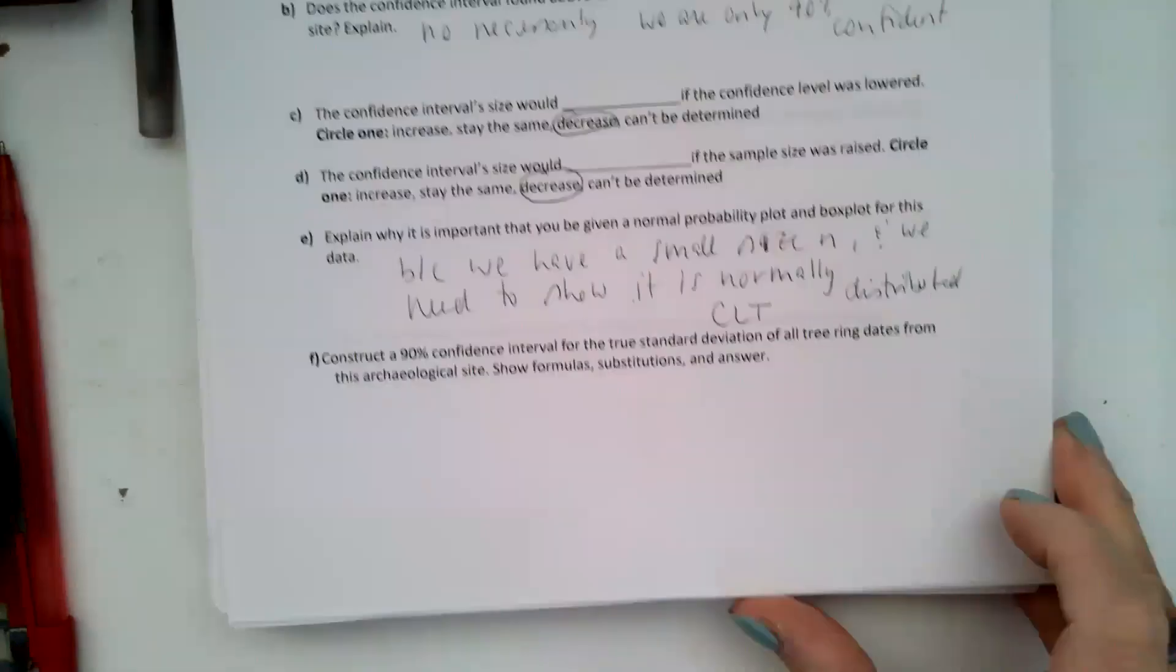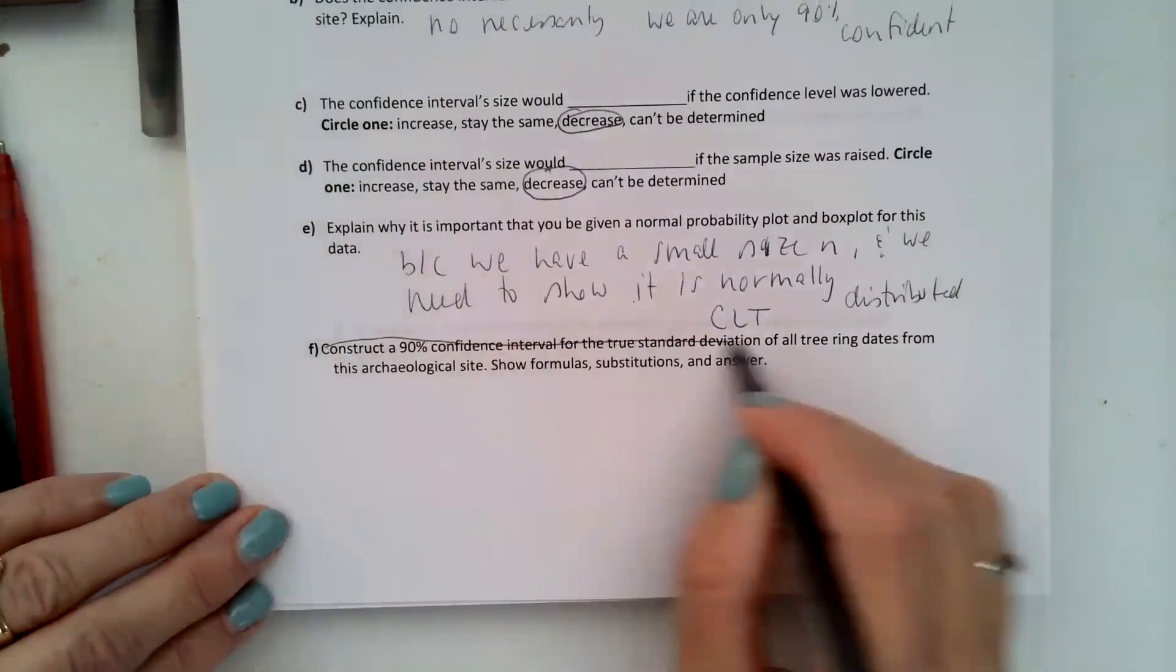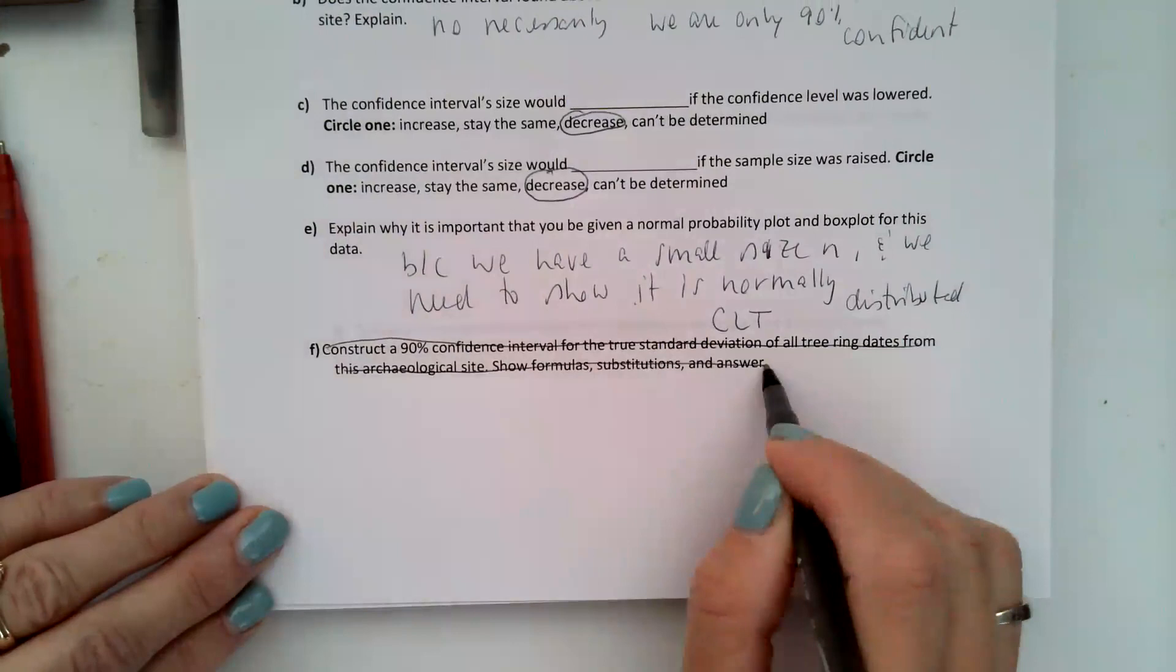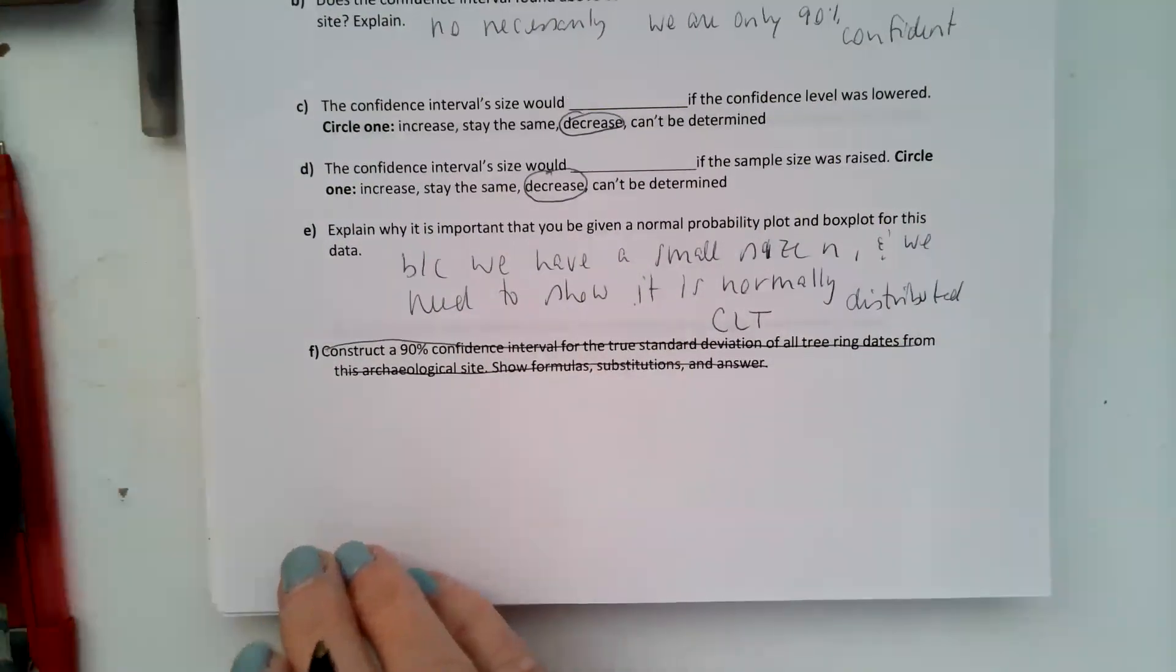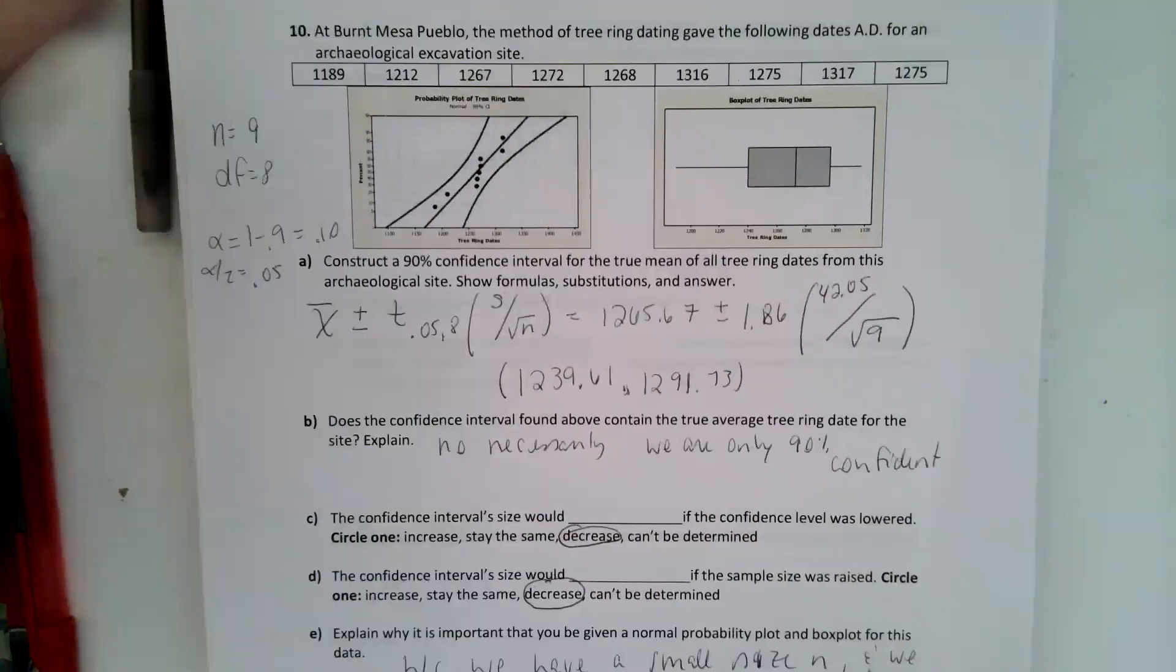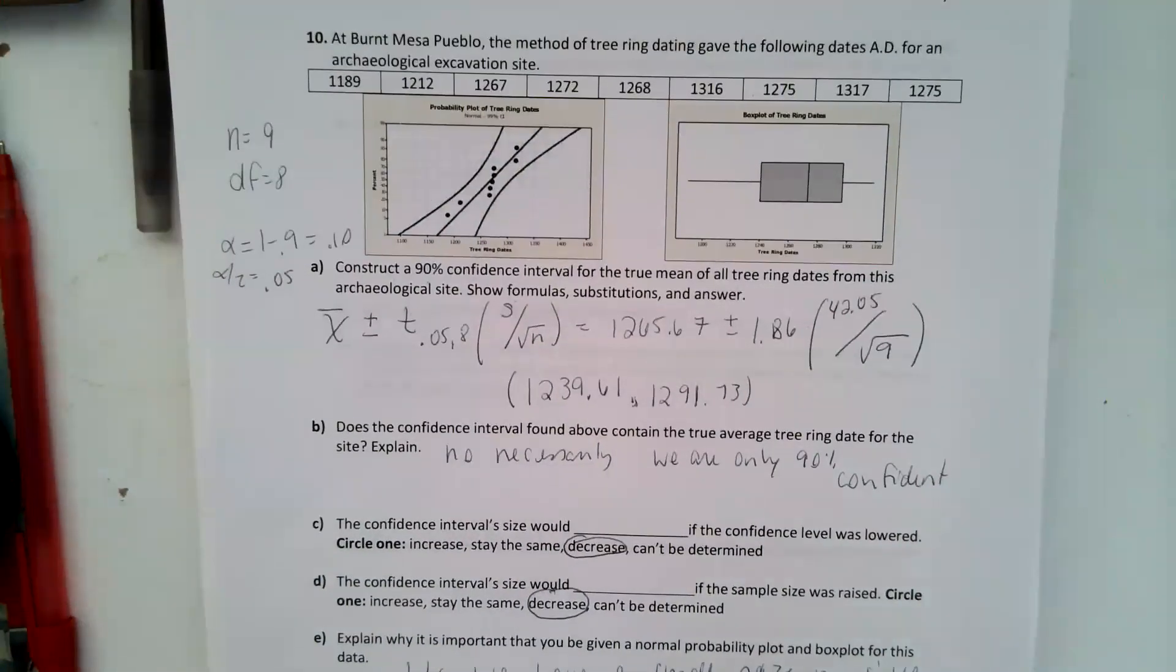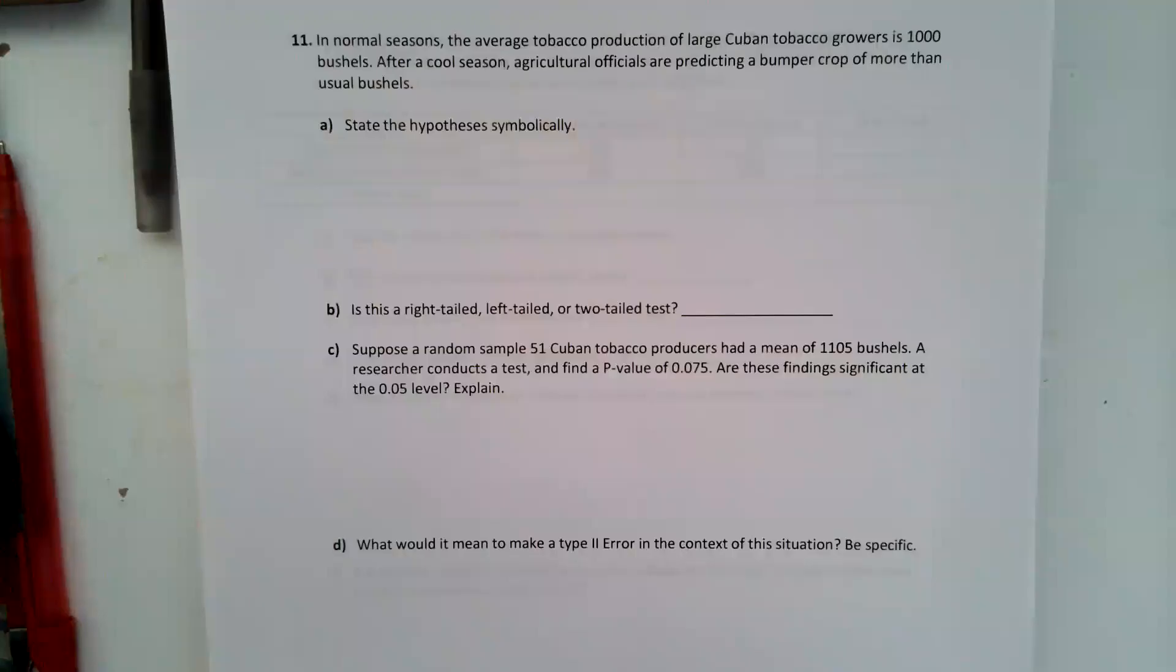Now it says construct a confidence interval for the true standard deviation. So we're not doing that one, I meant to delete that. We don't do confidence intervals for standard deviations. So that's the end of problem number 10, and that's dealing with one sample means quantitative data. Let's go to question 11.